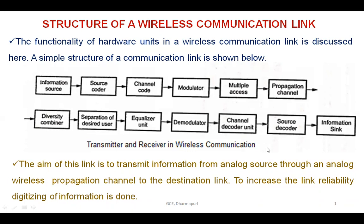On the receiver side, there is a diversity combiner, followed by an equalizer, demodulator, and channel decoder unit, then source decoder. The aim of this link is to transmit the information from an analog source through an analog wireless propagation channel to the destination.